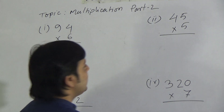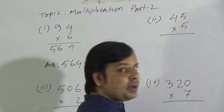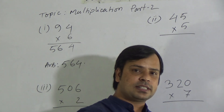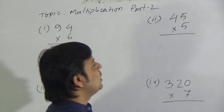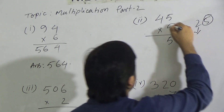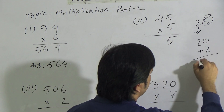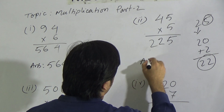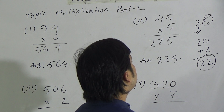Now I will solve the second question. We have to multiply 45 by 5. Say the times table of 5 up to 5: 5 0's are 0, 5 1's are 5, 5 2's are 10, 5 3's are 15, 5 4's are 20, and 5 5's are 25. We write 5 in the 1's place and carry 2. Now say the times table of 5 up to 4: 5 4's are 20, plus carrying 2 gives 22. Write 22 here. So the answer of question 2 is 225. The product of 45 and 5 is 225.